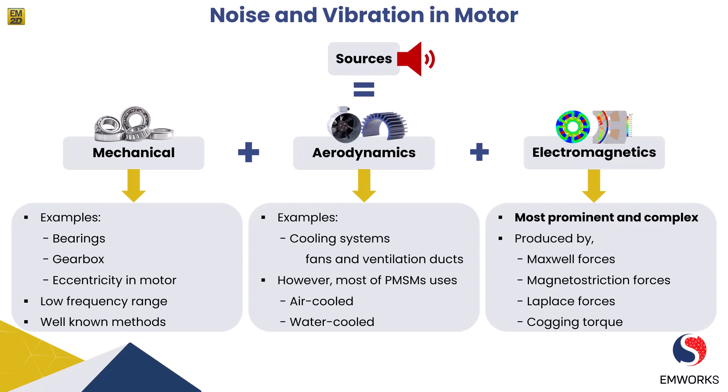The most prominent and complex source of noise and vibration in a motor is due to electromagnetics. Electromagnetic forces between the stator and rotor can result in vibration and noise. Non-uniform magnetic fields due to design imperfections, uneven winding distribution, or eccentricity — which we are going to talk about today — can also induce vibrations. Interaction between the magnetic field and structural components such as the stator core can generate magnetostrictive vibration.